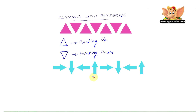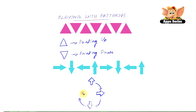Let's look at this other one. What do you think is the rule for this pattern? Now we have a whole bunch of arrows here. The directions of the arrows change clockwise. So that is the rule in this particular pattern.